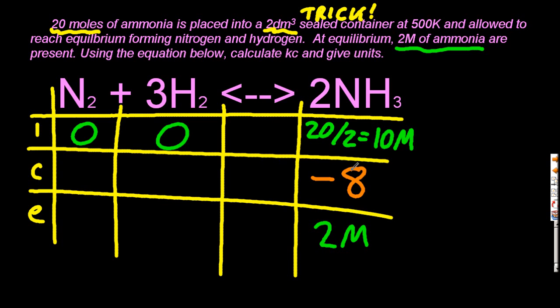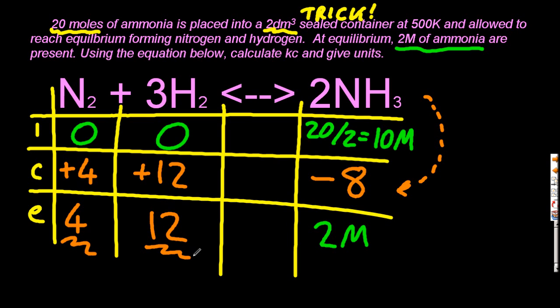The ammonia has gone from 10 to 2, it's gone down by 8. This change line has to mirror the coefficients in the equation at the top. So that's going to go up by 4 for nitrogen and up by 12 for hydrogen. Finally, the nitrogen goes from 0 to 4, and hydrogen goes from 0 to 12.